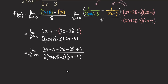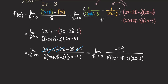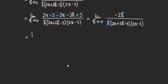Now we can start doing some cancellation. The 2x and negative 2x cancel each other out. The negative 3 and positive 3 also cancel each other out. So we are really just left with negative 2h. Let's write that: we have negative 2h in the numerator, and at the bottom we still just copy. Then we can cancel out the h, and after canceling, we have just negative 2 at the top, and the two factors (2x + 2h − 3)(2x − 3) at the bottom.